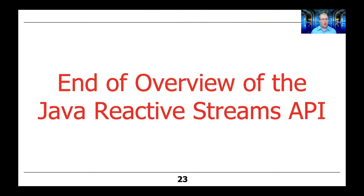That's the end of a quick overview of the Java Reactive Streams API. At this point, you're probably wondering what the heck good is this and how could you write real programs with that. That's a very good question, and we'll begin to answer it in more detail starting in the next part of the lesson.